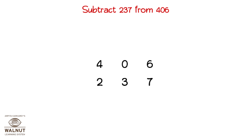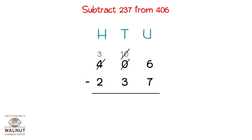Subtract 237 from 406. We write the numbers one below the other and write the place values. We look at the units place and have to borrow from the tens place, but there is a 0 there, so there is nothing to borrow. So we borrow from the hundreds place. The hundreds place can give to the tens place, not the units place. So we borrow and add it to the tens, then borrow from the tens and add it to the units. Then we subtract the units, subtract the tens, subtract the hundreds, and get the final answer, which is 169.